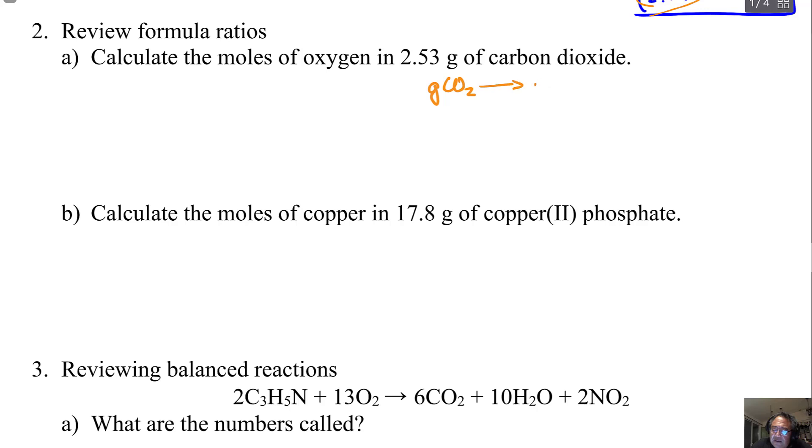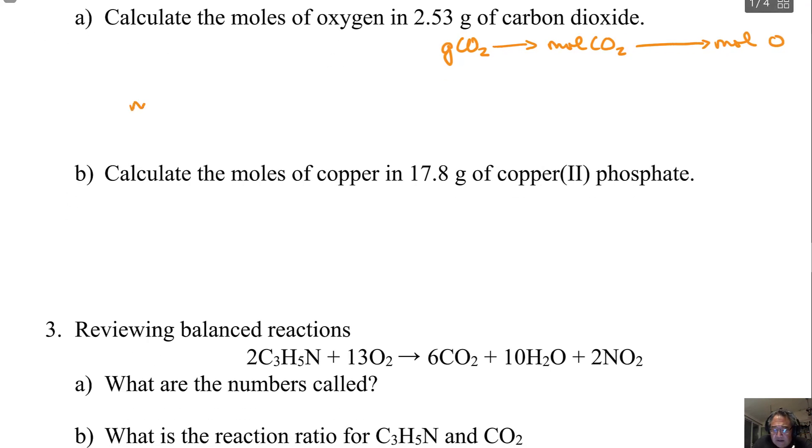We're going to get grams of CO₂, convert that to moles of CO₂, and then use the formula ratio from the chemical formula of CO₂. We know there's two moles of oxygen for every one mole of CO₂, and that will allow us to get to moles of oxygen. So moles of oxygen: 2.53 grams of CO₂, and there's two conversion steps. The first step is to go to moles, so 44.01 grams of CO₂ for every one mole of CO₂.